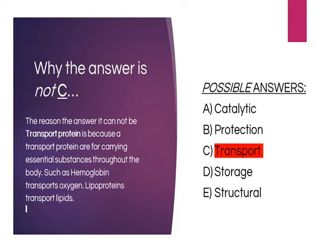Option C: Immunoglobulin would be classified as a protection protein, not a transport protein. The reason is that transport proteins are used for carrying essential substances throughout the body, such as hemoglobin which transports oxygen, and lipoproteins which transport lipids throughout the body.